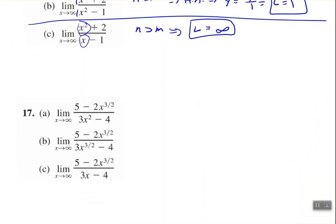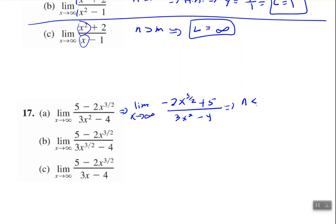For number 17, you may want to rewrite that. So negative 2x to the 3 halves plus 5 over 3x squared minus 4. We see that the degree in the numerator is less than the degree in our denominator. When the degree of the numerator is less than the degree of the denominator, our horizontal asymptote is at y equals 0. Therefore, the limit equals 0.